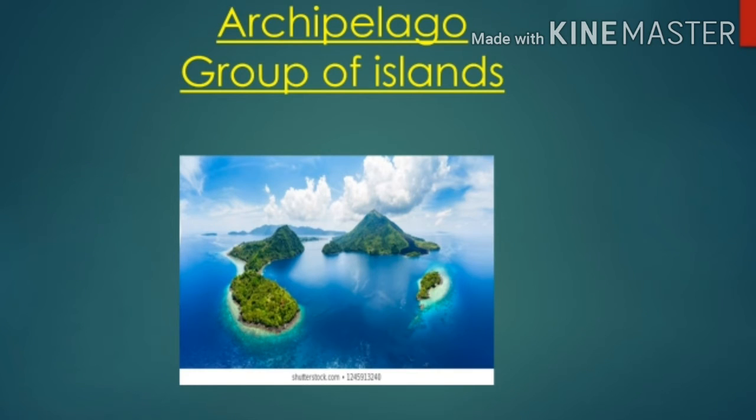The major oceanic divisions are defined in part by the continents and various archipelagos. Archipelago means a group of islands — an island being a landmass surrounded by water on four sides. This concludes our first topic on Oceans.